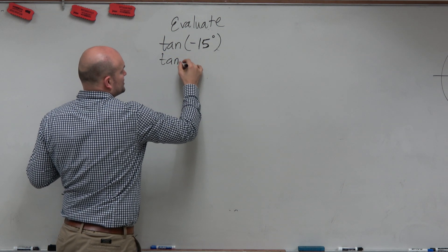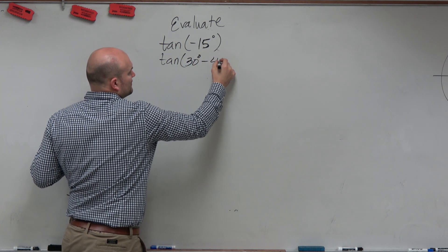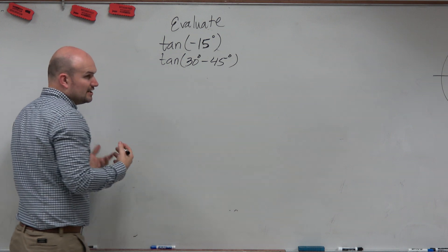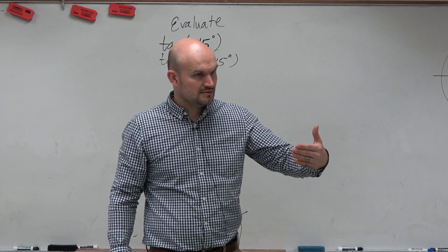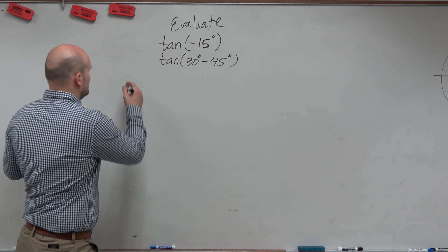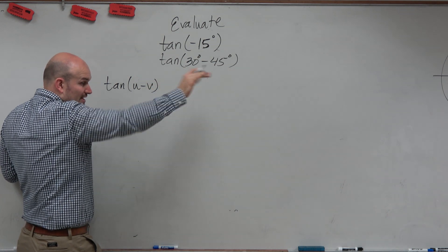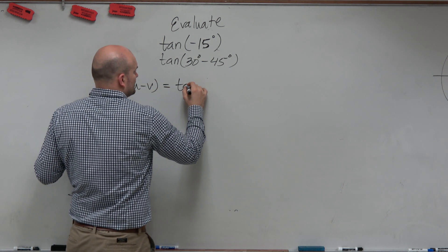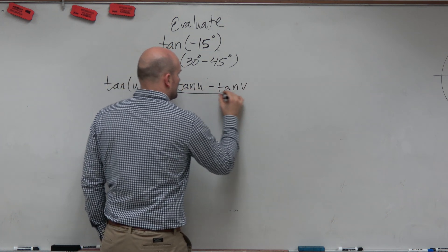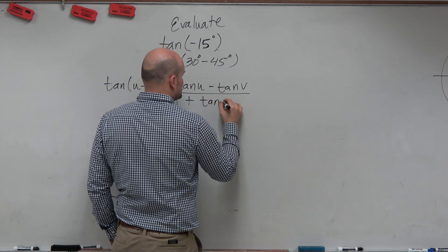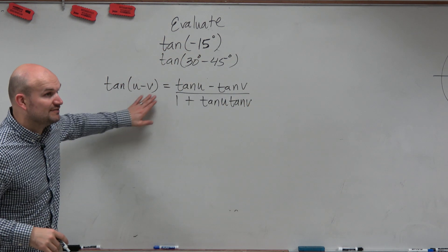But one way we can do it is tangent of 30 degrees minus 45 degrees. And here if I notice, I recognize this as a difference of two angles, correct? So this tangent of u minus v, which we've written down in our notes, is tangent of u minus tangent of v all over 1 plus tangent of u tangent of v.